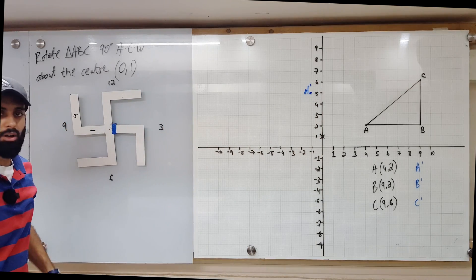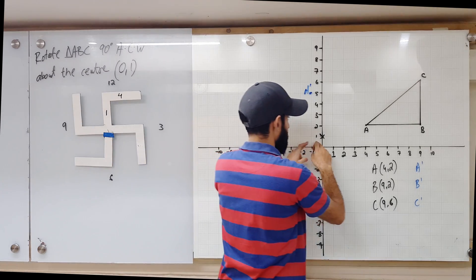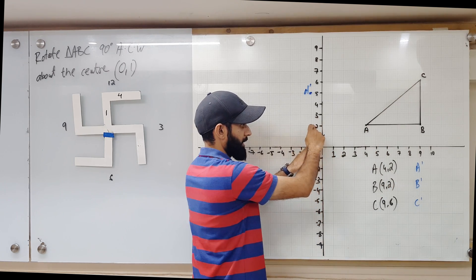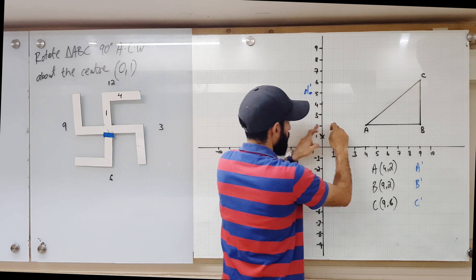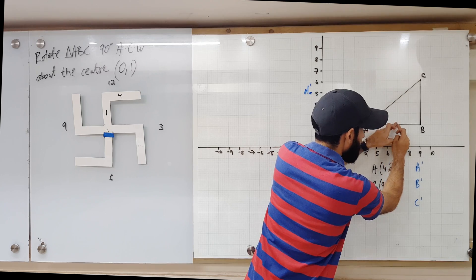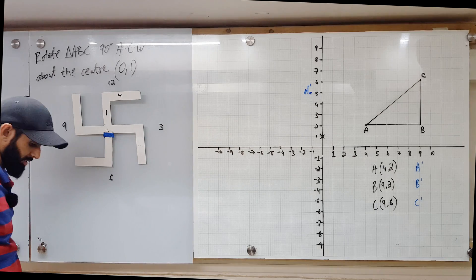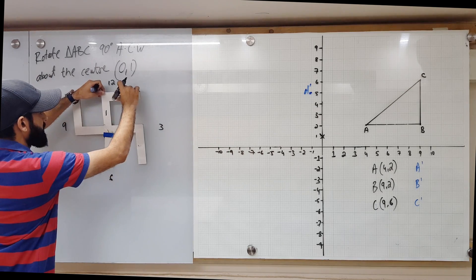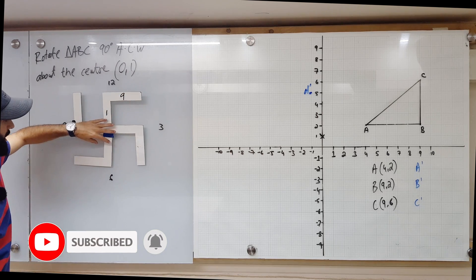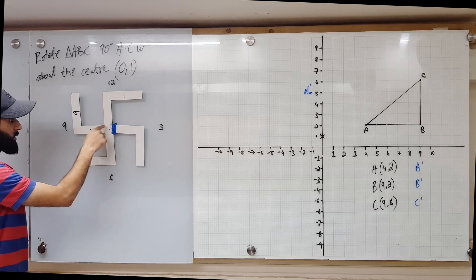Let's bring this back to normal. Now from the center, if I want to go to B, I'll have to move one unit up and then one, two, three, four, five, six, seven, eight, nine — so one unit up and nine units towards the right. The only thing I'm going to change is the four to nine. Now if I rotate this 90 degrees anti-clockwise, I'm going to take this one unit left and nine units up.